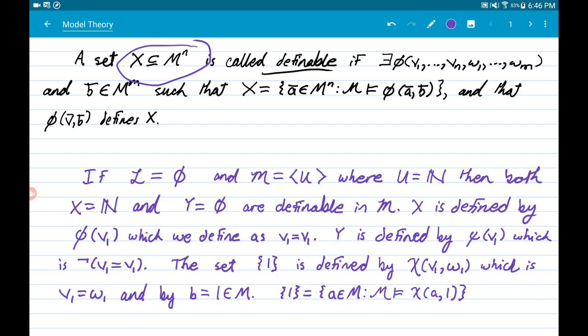The set X is definable if there exists a phi in the language with n free variables that we label v, with m extra free variables that we label with w's. But really, keep in mind, the main claim is on the existence of such a phi and the existence of some element in the product of sets. This is just any constant should we want to fix it.